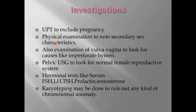Now let's see the investigations. For any patient of amenorrhea, the first investigation is UPT — urine pregnancy test — to exclude pregnancy and confirm she is not pregnant. Then physical examination is done to note secondary sex characteristics, and examination of the vulva and vagina is done to look for causes like imperforate hymen. Pelvic sonography is done to find out if the normal female reproductive system is present. Then hormonal tests — serum FSH, LH, TSH, prolactin, and testosterone — are also done. Karyotyping is done to find out if there is any chromosomal anomaly.